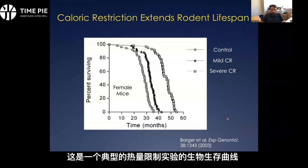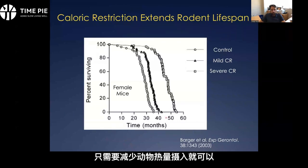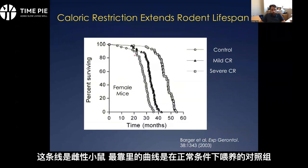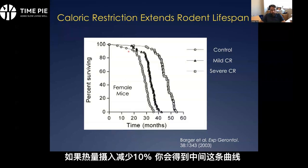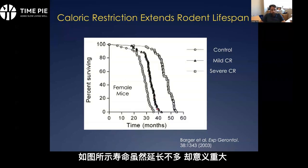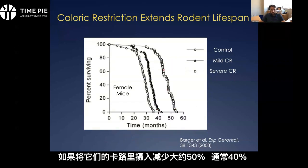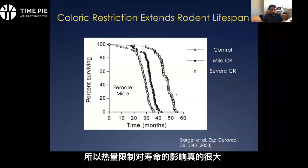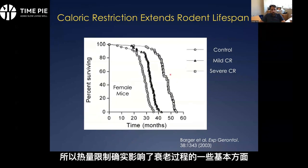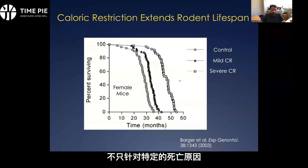This is a survival curve from a typical calorie restriction experiment where you simply give the animals less calories — female mice in this case. The inside curve is the control group fed under normal conditions. If you mildly restrict calorie intake by about 10%, you get a small but significant lifespan extension. If you very severely restrict calorie intake by about 50% — usually about 40% — you get a dramatic shift in the survival curve where even the luckiest animals in the control group are dead before the majority of calorie-restricted animals. This can have a really profound effect on lifespan, and it's accepted that calorie restriction really does affect something fundamental about the aging process, not just a few specific causes of death.